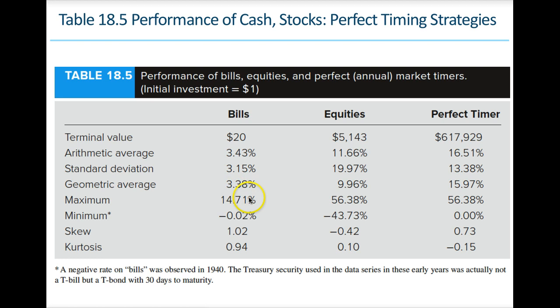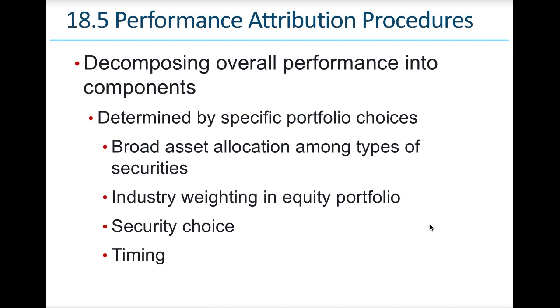Looking at performance of bills — like treasury bills — equities, and a perfect timer moving allocation in and out between them, the difference between terminal values can be quite significant across the three categories over time. Performance attribution procedures decompose overall performance into components: broad asset allocation among different security types, industry weighting in an equity portfolio, security choice, and timing — all contributing to portfolio performance.